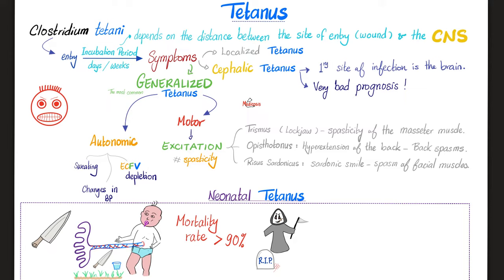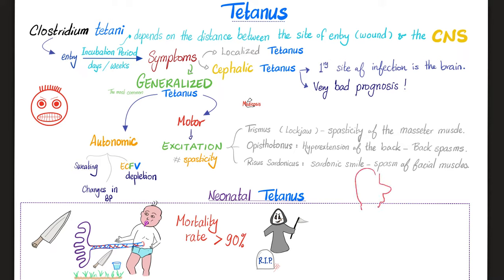Inhibiting GABA in the motor nervous system causes hyperexcitation — spasticity. Spasticity of the jaw is called trismus, specifically spasticity of the masseter muscle, which is the strongest skeletal muscle in the entire human body. Spasticity of the facial muscles causes the classic sardonic smile, rhesus sardonicus. Spasticity of the back muscles causes hyperextension of the back, opisthotonus. When you see these symptoms — the abnormal curvature of the back, the locked jaw, the sardonic smile — do not wait for lab results. You can already treat for tetanus.